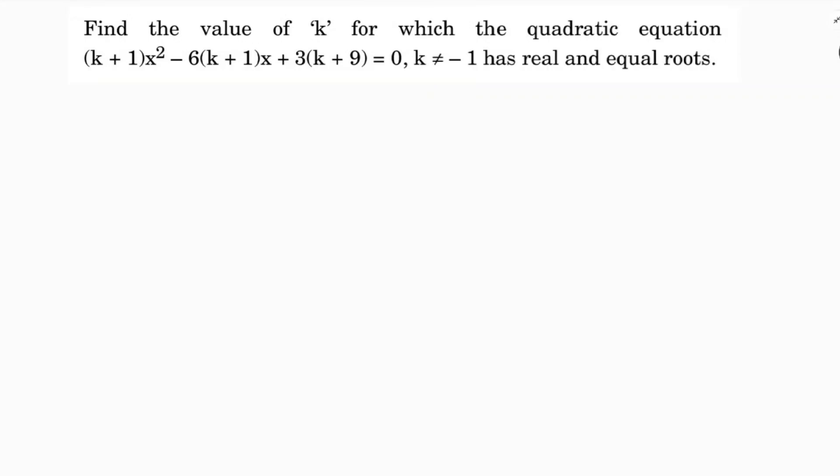Find the value of k for which the quadratic equation (k+1)x² - 6(k+1)x + 3(k+9) = 0, where k ≠ -1 (because if k = -1, the coefficient of x² becomes zero and it will not be a quadratic equation), has real and equal roots.